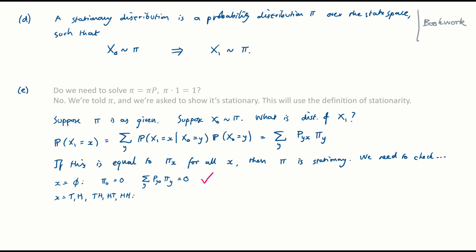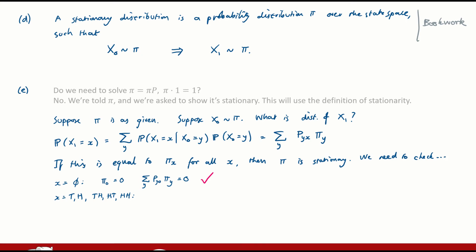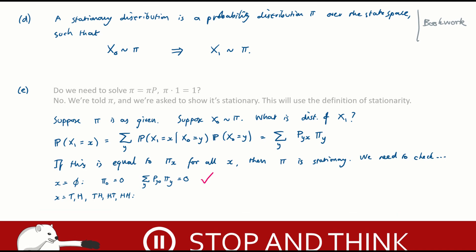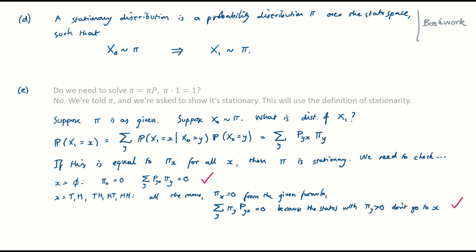Next, let's look at these five states: tails, heads, tails-heads, heads-tails, and heads-heads. For any one of these five states, the formula given in the question has pi_x equal to 0. Evaluating the expression — sum over y of pi_y times P_{yx} — equals 0, because none of the states with positive pi_y lead back to state x. So either pi_y equals 0 or P_{yx} equals 0, and therefore the sum is 0. For state x equals TT: the stationary distribution says pi_x equals lambda, and evaluating the right-hand side gives 1 times lambda — there's only one state which contributes. So the equation is satisfied.